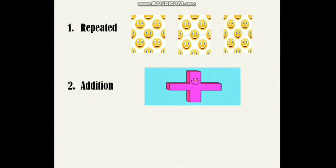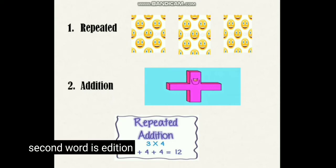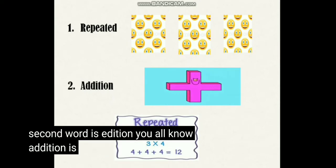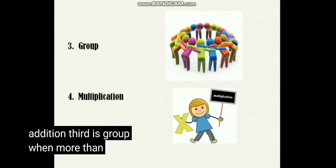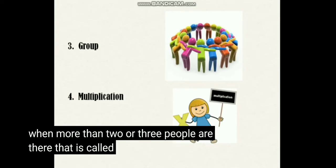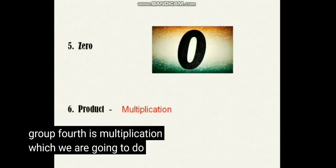जब कोई चीज़ बार बार आती है तो उसे कहते हैं Repeat होना। Like, you can see here I have given three groups of smileys and all are the same — पहला ग्रूप भी सेम है, दूसरा भी सेम है, तीसरा भी सेम है। Second word is Addition — Addition is plus करना या जोड़ना। Third is Group — when more than two or three people are there, that is called a Group — एक से ज़्यादा होते हैं तो उसे हम Group कहते हैं। Fourth is Multiplication, which we are going to do in this chapter.